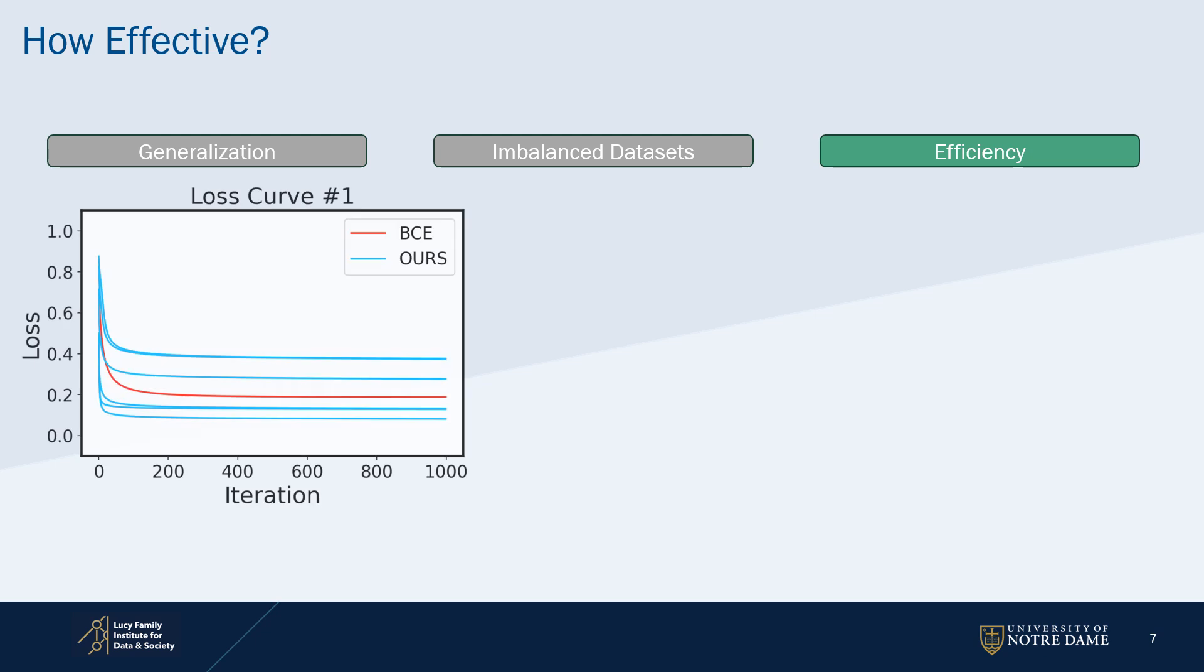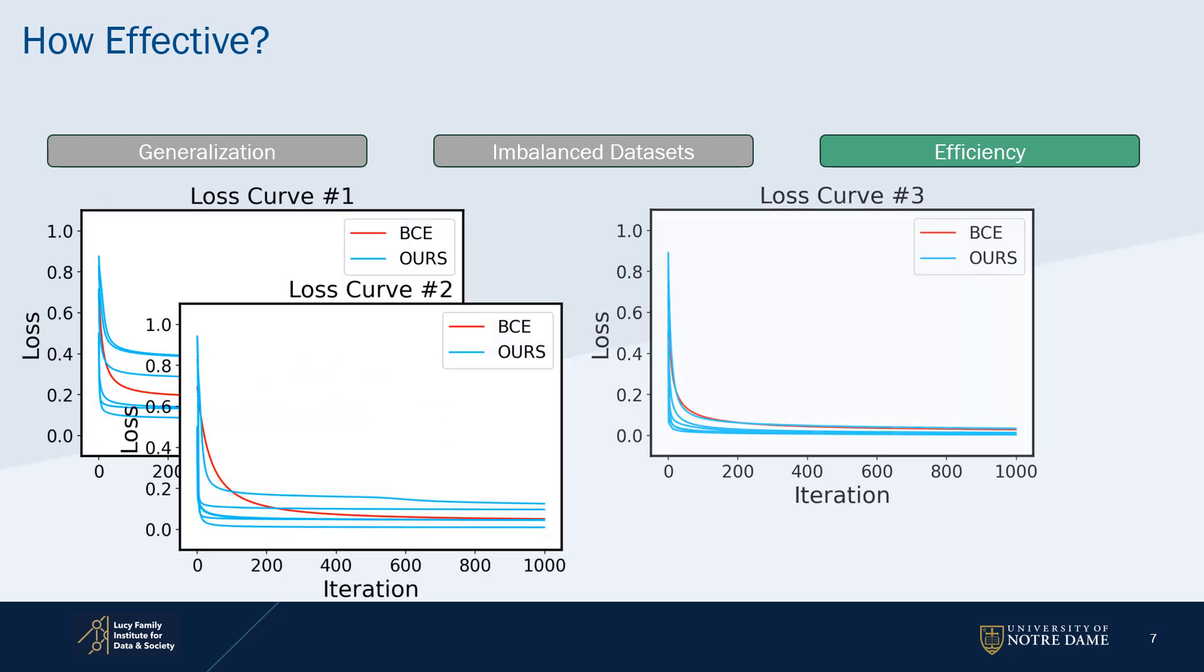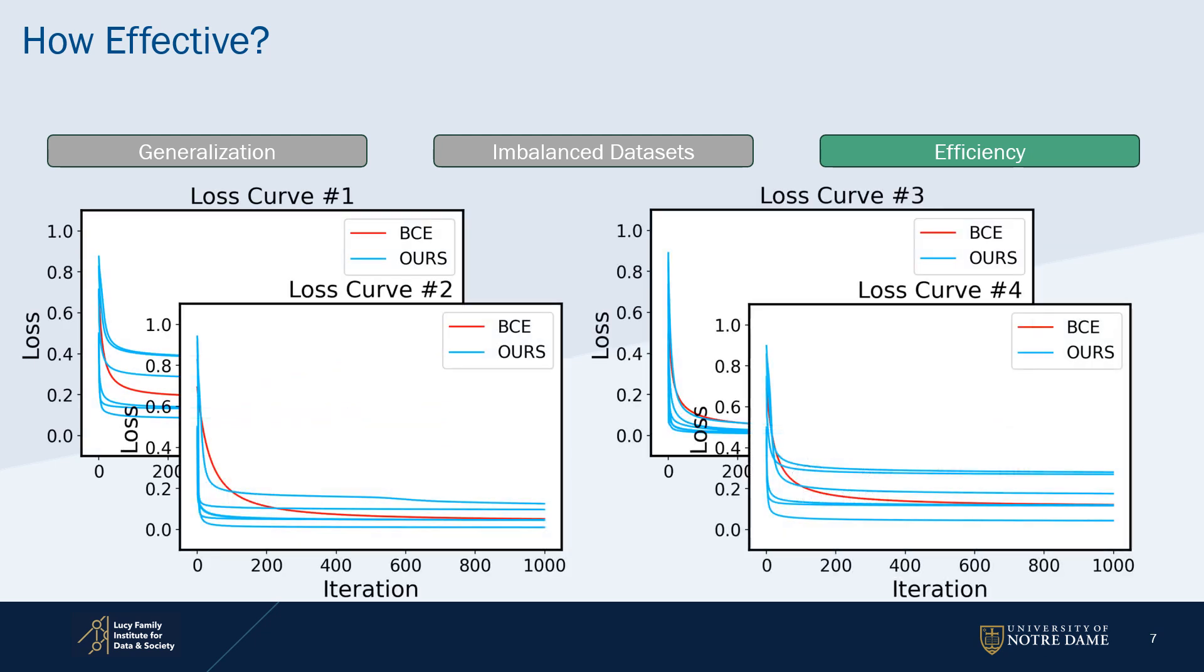Moreover, it learns efficiently, so it can be compared to the learning speed of binary cross-entropy, the representative loss in a neural network.